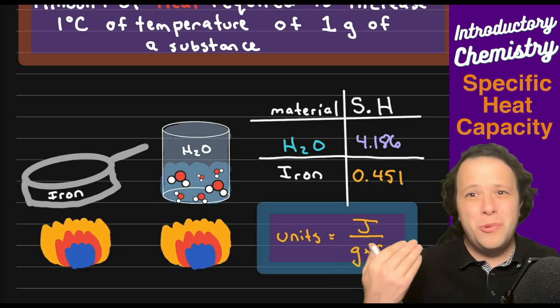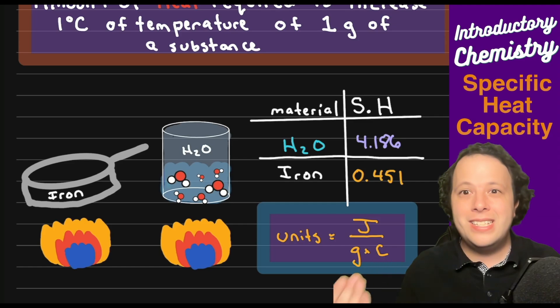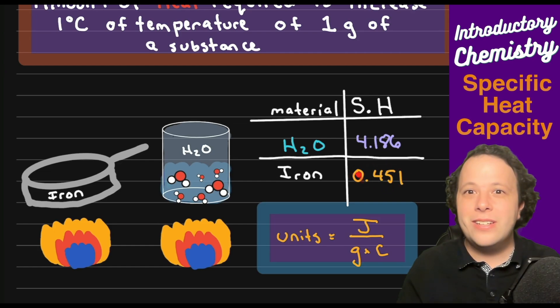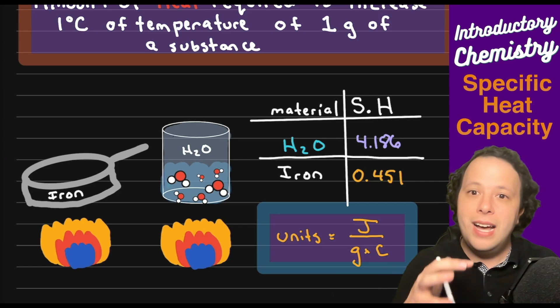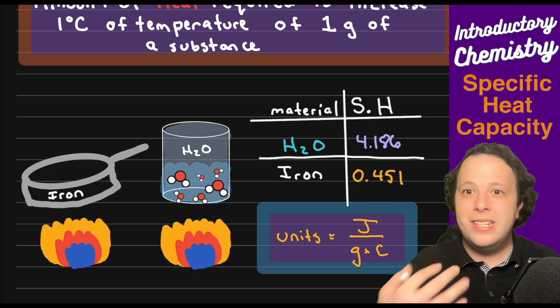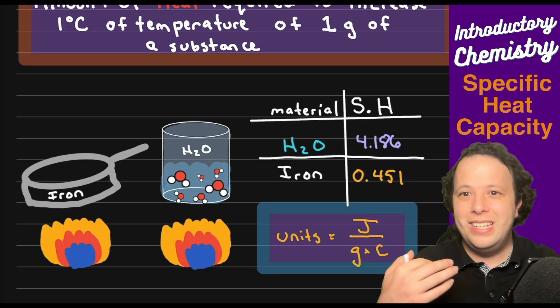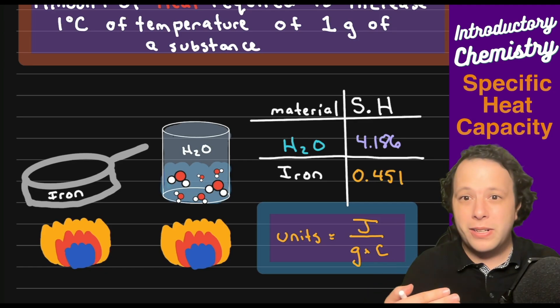You can really see that with that lower value here, right? 0.451, that's a lot less energy that's required to heat that up. So it's going to be a lot less effort for the heat to be able to do that. So that's kind of the idea here of what we're going to be looking at.